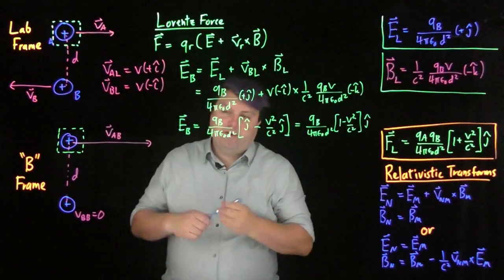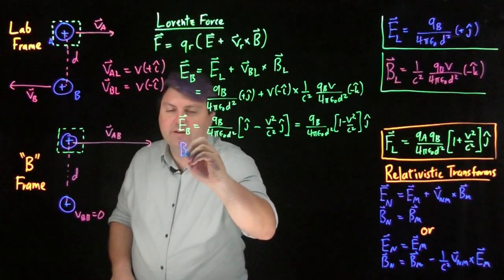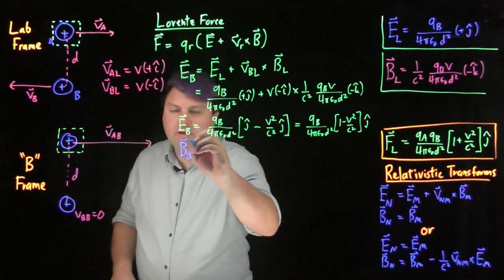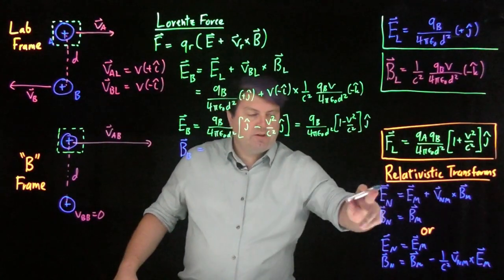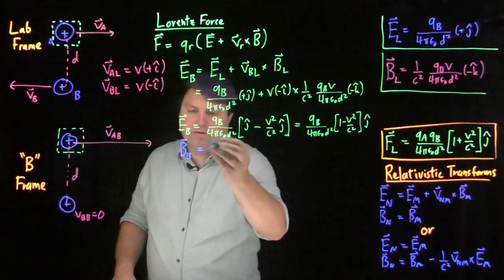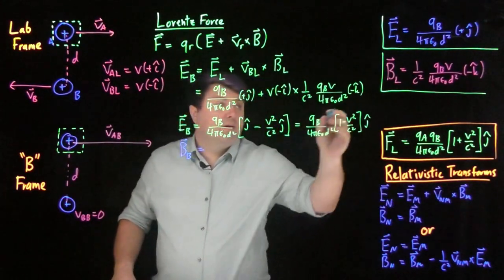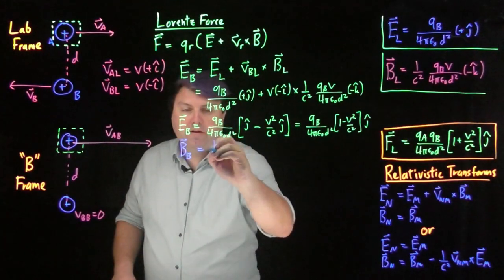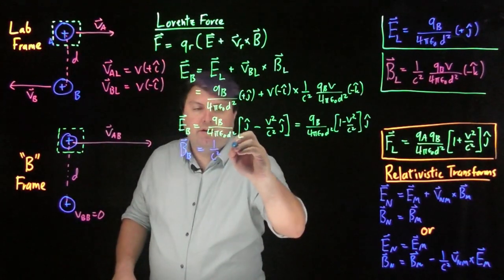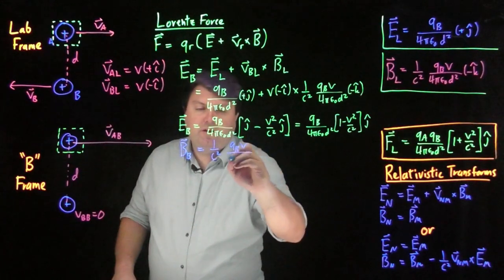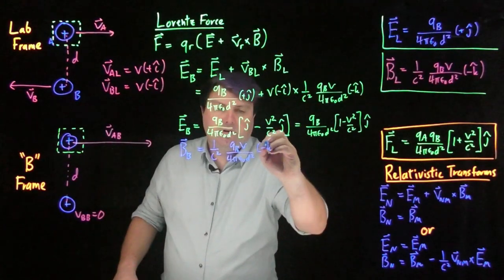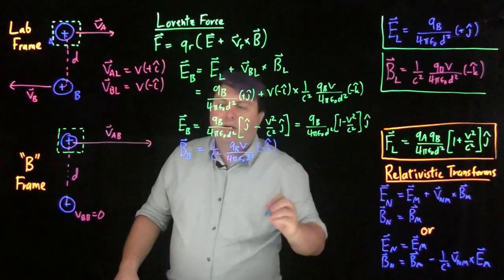Our magnetic field is going to be quite a bit easier. The magnetic field in frame B, since we use this electric field transform, is just equal to the magnetic field in the original frame. So this is 1/C² × V_B over 4π ε₀ D² in the negative K hat direction.